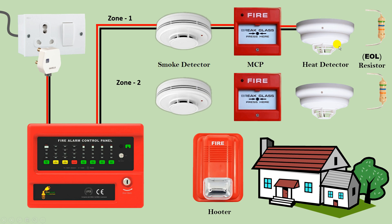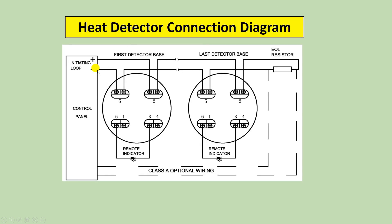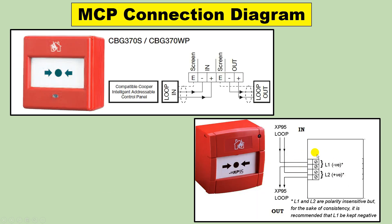Now take power supply from the MCP and provide it to the heat detector. In the heat detector also the connections are done in the same way — different numbered terminals are given. Connect negative power supply to negative and positive to positive terminal. Similarly, through looping of wire, provide power supply to the next device.